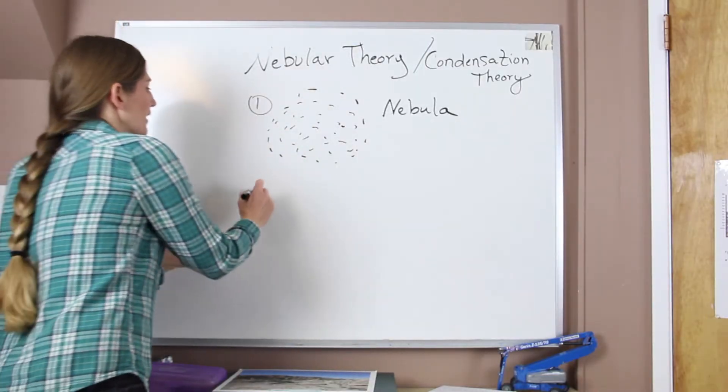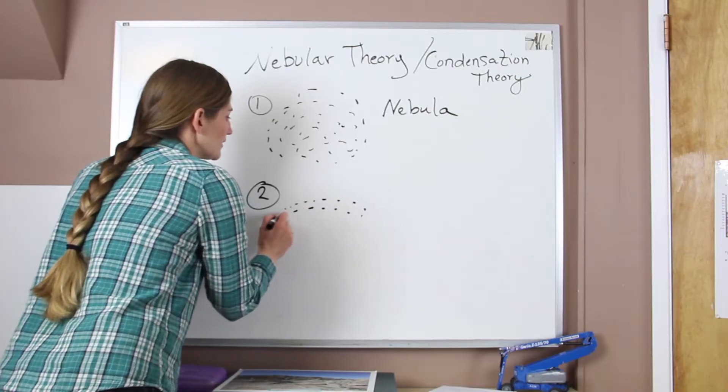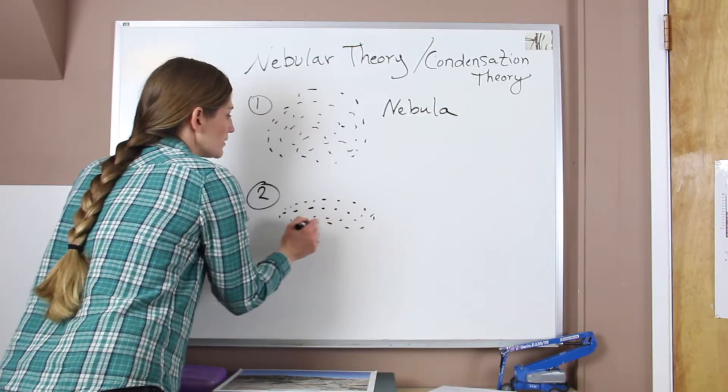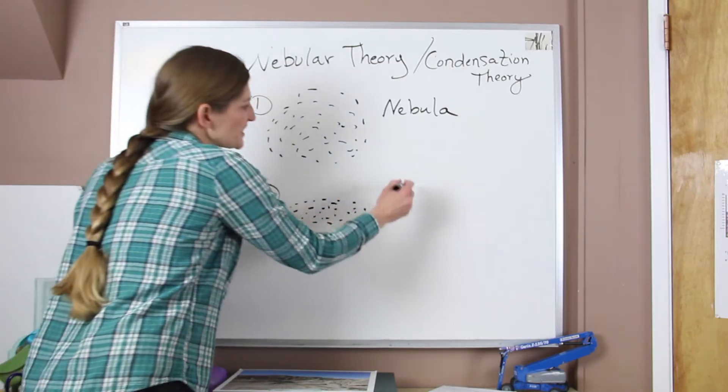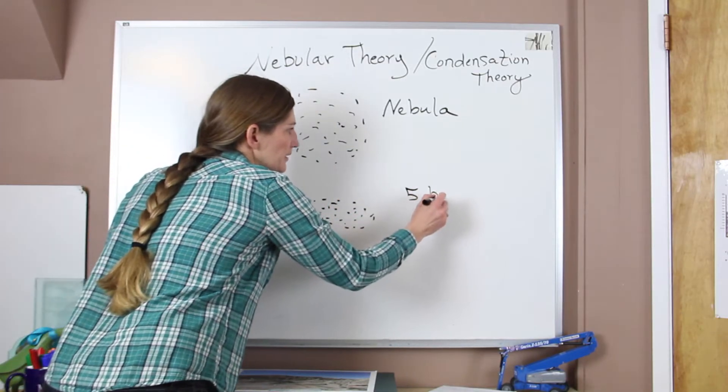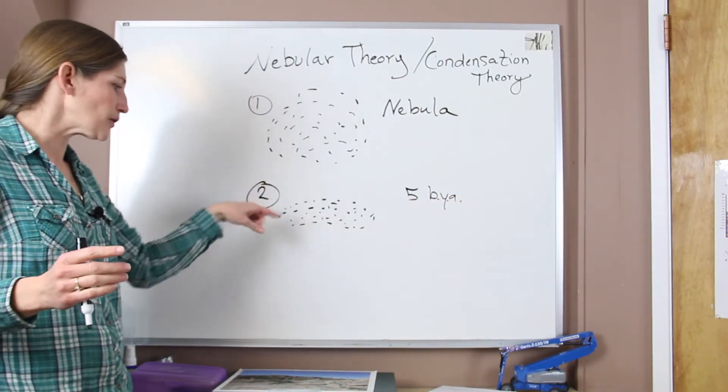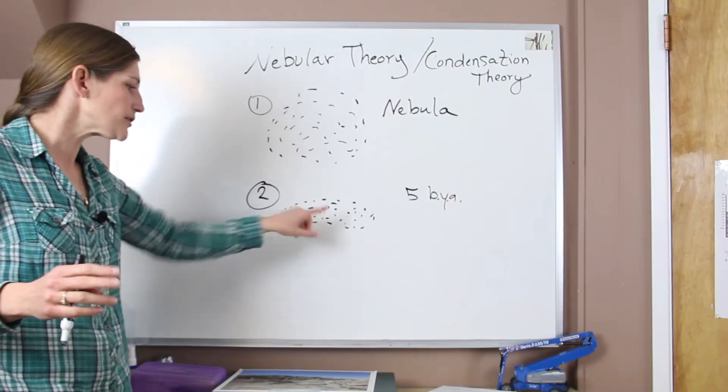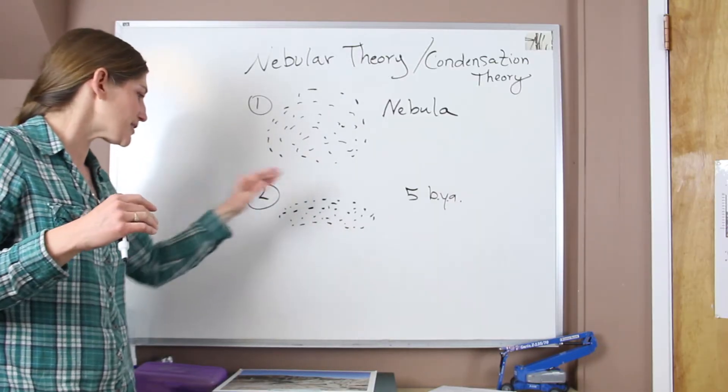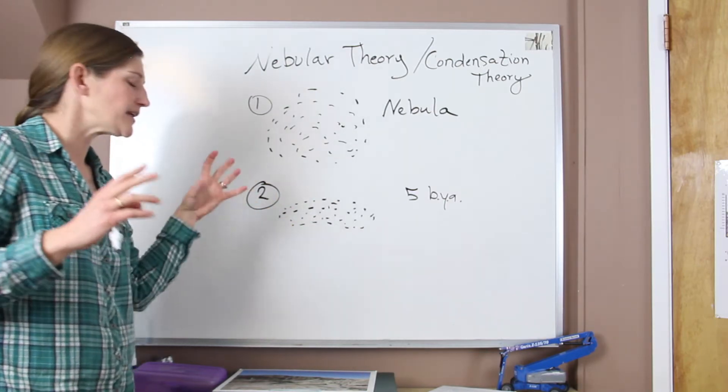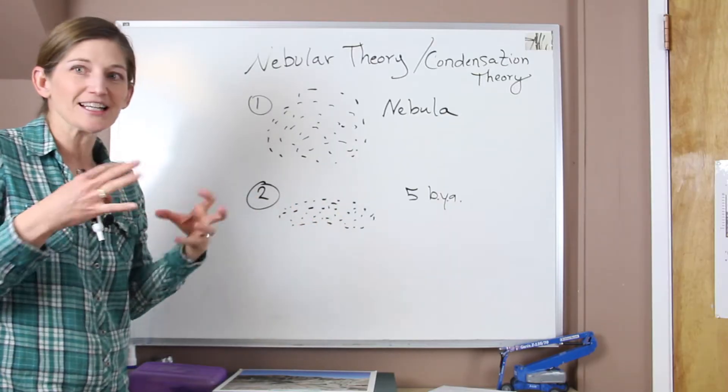As it comes together in step two, it starts to flatten and rotate. So kind of draw a flattened disk as it's coming down. This is said to have been about five billion years ago. And we start to get a protosun that's starting to form in the center and that's going to have fusion happening in this protostar. And then we're going to start to see the accretion or the colliding of all of this other particulate matter.